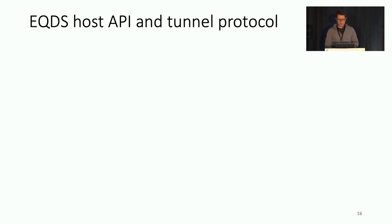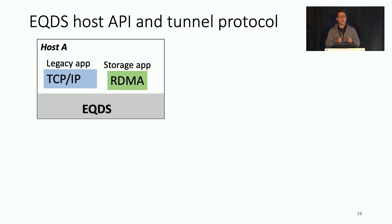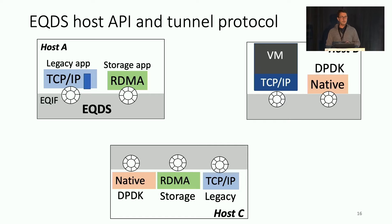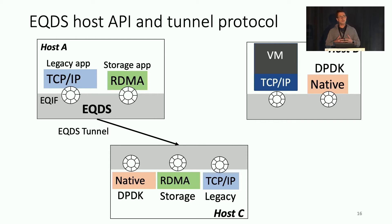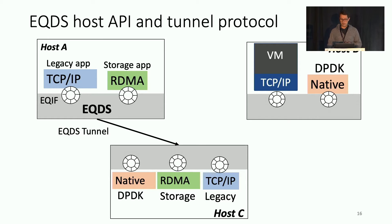On the host, you have a bunch of networking stacks — in this case a TCP/IP stack and an RDMA stack. For each of these, EQDS provides a virtual interface called the EQIF. Whenever a packet is created to go to another host, EQDS creates a tunnel to that destination on demand — it's not preset, it's zero RTT setup. The tunnel state is soft state that can be dropped under memory pressure, and memory requirements of EQDS are quite modest. If both TCP and RDMA stacks are communicating with the same host, they reuse a single tunnel per host pair.